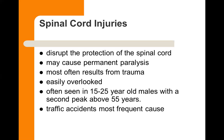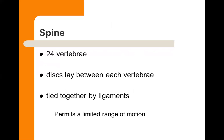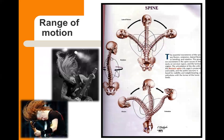Graphic accidents are the most frequent cause. We have 24 vertebrae in our spine, and between each vertebra lies a disc. They are tied together by ligaments, which permits a limited range of motion. We actually have quite a bit of lateral flexion and rotation. The spiny processes are on the outside of the spine — if you feel your own back, you will feel your spiny processes.